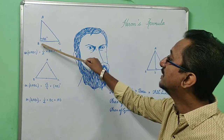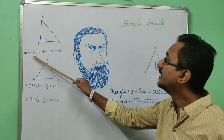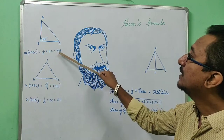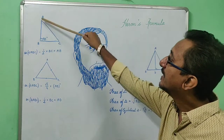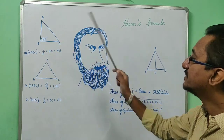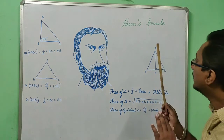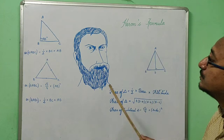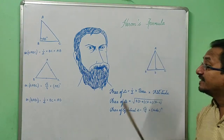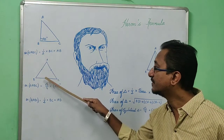Now let's move to the right angle triangle. Suppose I have taken a right angle triangle ABC with angle B as the right angle. So the area of triangle ABC equals half into base into height, where AB is the height. This formula — half into base into height — applies to both general and right triangles.